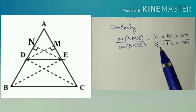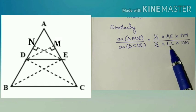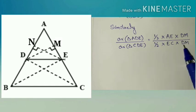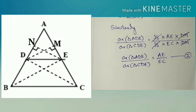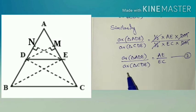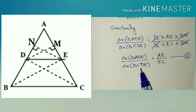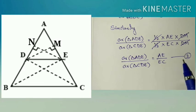Similarly in triangle CDE half into base, base that is EC and height is same that is DM. Again here also cancelling the same terms. We will get here ratio area of triangle ADE divided by area of triangle CDE is equal to AE by EC. So take it as equation number 2.